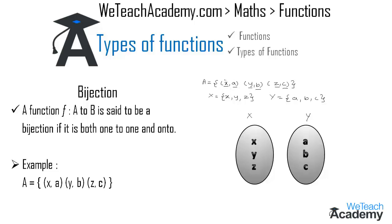Now let us map both Venn diagrams using the given ordered pairs. The first ordered pair is (x, a), so we map x with a. The second ordered pair is (y, b), so we map y with b. The last ordered pair is (z, c), so z is mapped with c.